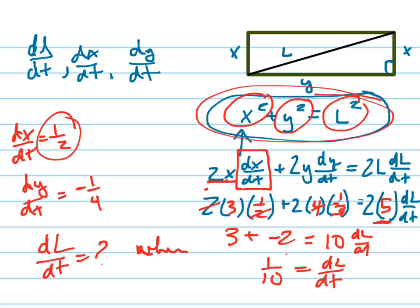The next part asks, is the diagonal increasing or decreasing at that instant? It's increasing because DL/DT is positive.